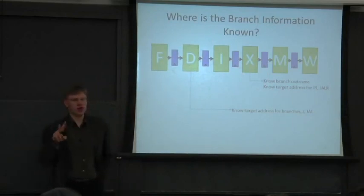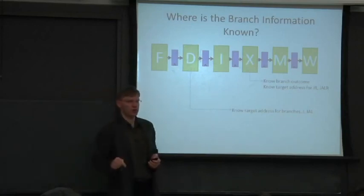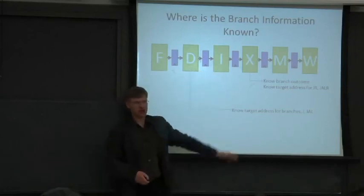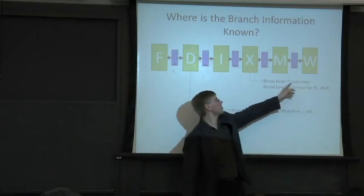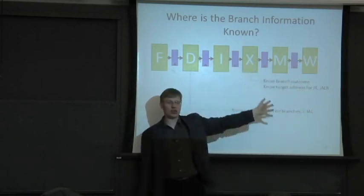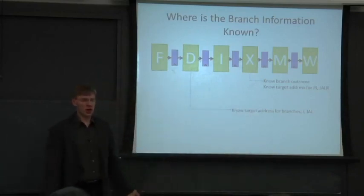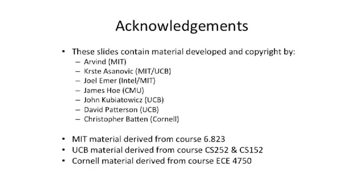At least by the time we're done here, we have both addresses that the branch could potentially go to - either the fall-through address or the branch target. We know that at the end of the decode stage. For jump-and-link registers and jump registers, we don't even have that information. It's not encoded in the instruction anywhere. It's encoded in a register. We need to fetch something from the register. It might have to go through the bypass network, so we're going to have to wait.